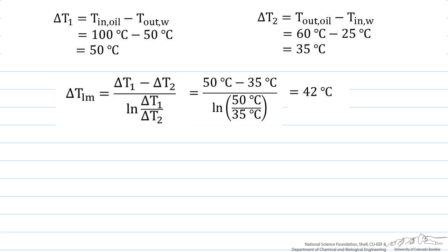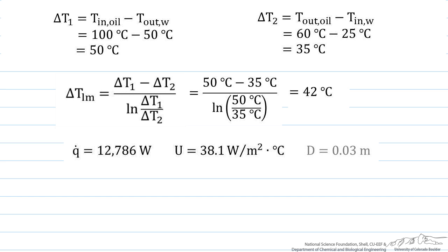And now let's put in numbers for our length. For sizing a heat exchanger using parallel flow, we found that our heat transfer rate was 12,786 watts, our overall heat transfer coefficient was 38.1 watts per meter squared degrees C, our diameter was equal to 0.03 meters, and our delta T log mean is 42 degrees C.